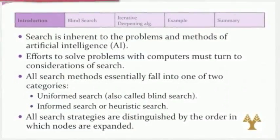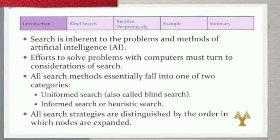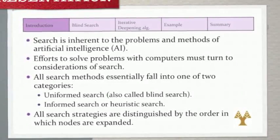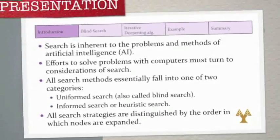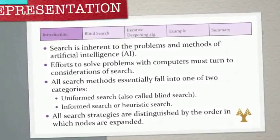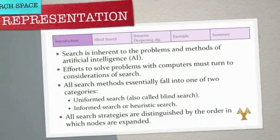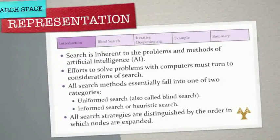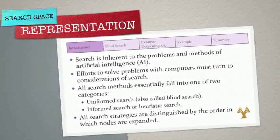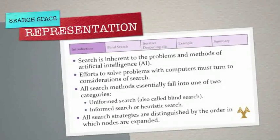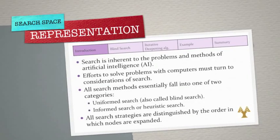Search is inherent to the problems and methods of artificial intelligence, because AI problems are intrinsically complex. Efforts to solve problems with computers which humans routinely solve by employing cognitive abilities, pattern recognition, perception, and experience invariably must turn to consideration of search. All search methods essentially fall into one of two categories: uniform search, also called blind search, and informed search or heuristic search. Blind search means they have no additional information about states beyond that provided by the problem definition — all they can do is generate successors and distinguish a goal state from a non-goal state.